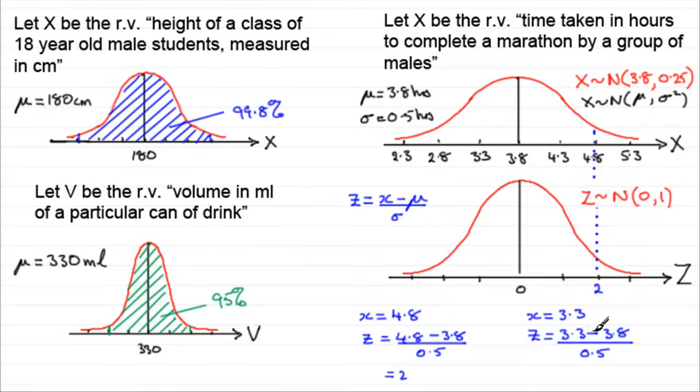So we get 3.3 take away 3.8, which is minus 0.5, divide that by 0.5, and you get z equals minus 1. Corresponds to this point. One standard deviation then below the mean.